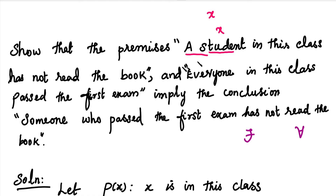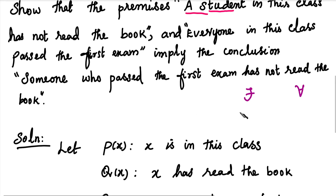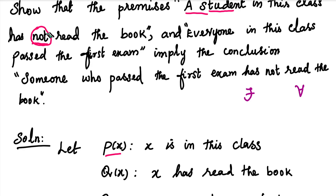Since we have two different sentences, we will give different names. For 'x is in this class', we give the name P(x). For 'x has read the book', we give the name Q(x). Since the premise says 'has not read the book', we will use the negation, giving us ¬Q(x).